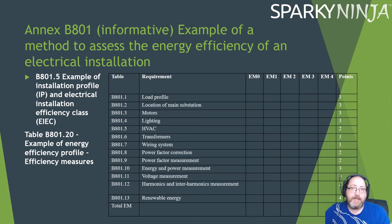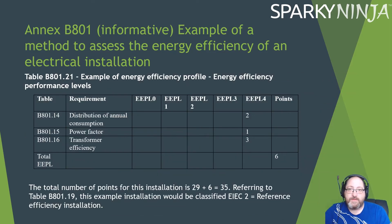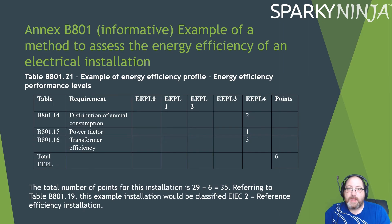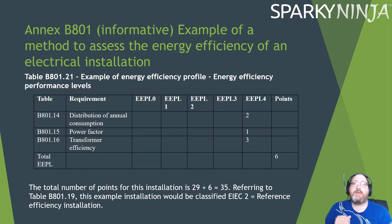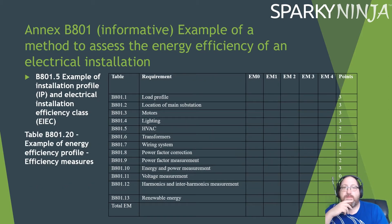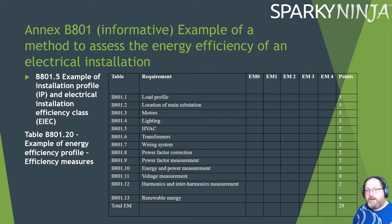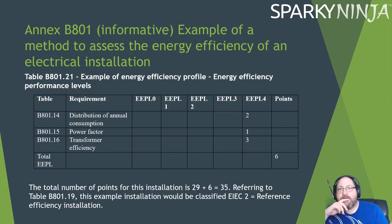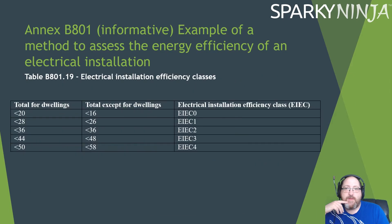In the example: load profile scored three, location of main substation scored three, motors scored three, transformers scored one, wiring systems scored one. For performance levels: distribution of annual consumption scored two, power factor scored one. The total number of points for this installation is 29 plus 6, which equals 35.